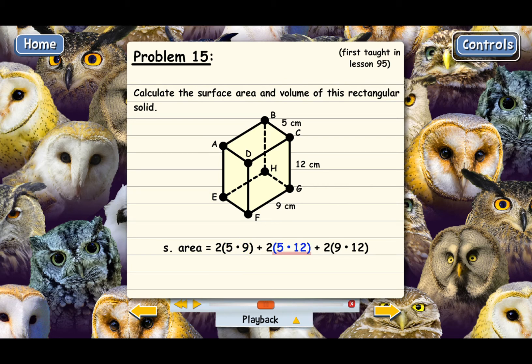Here's 5 times 12, and that's this face here BCGH, and then the other one ADFE. There are two of those, so I have 5 times 12 multiplied by 2.